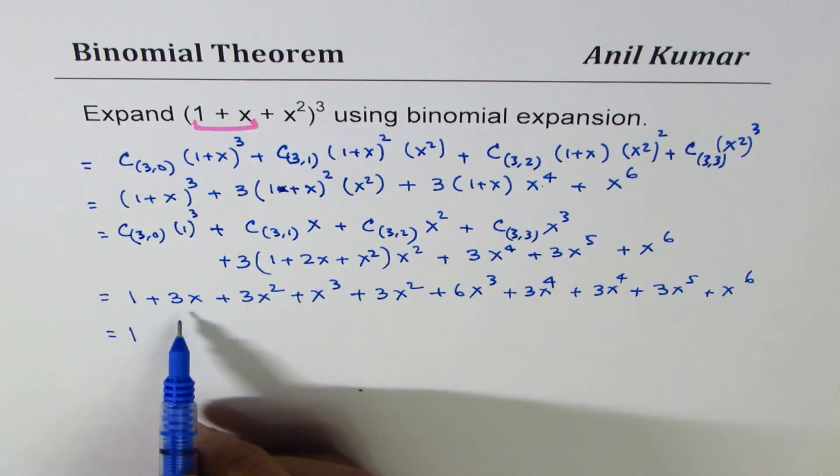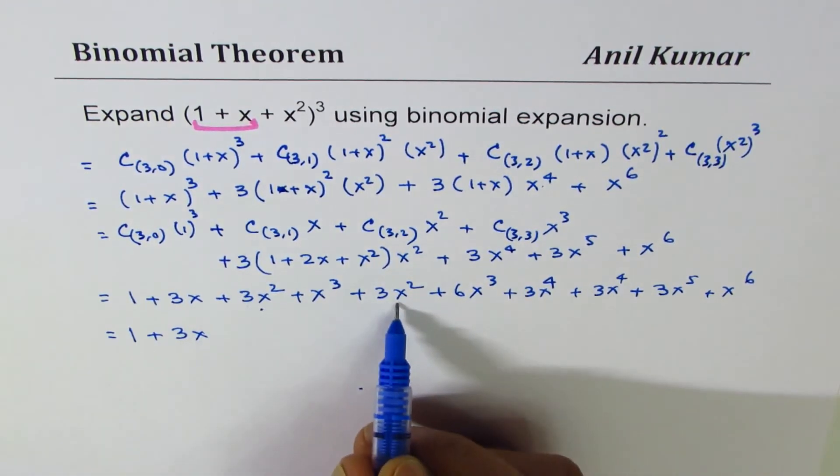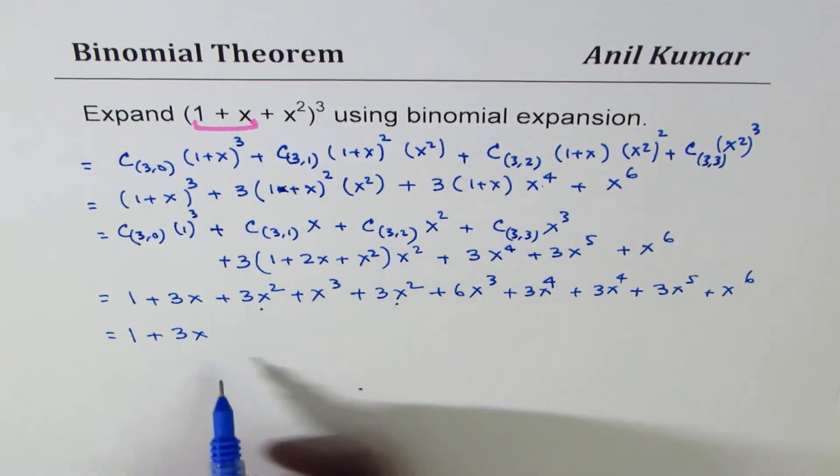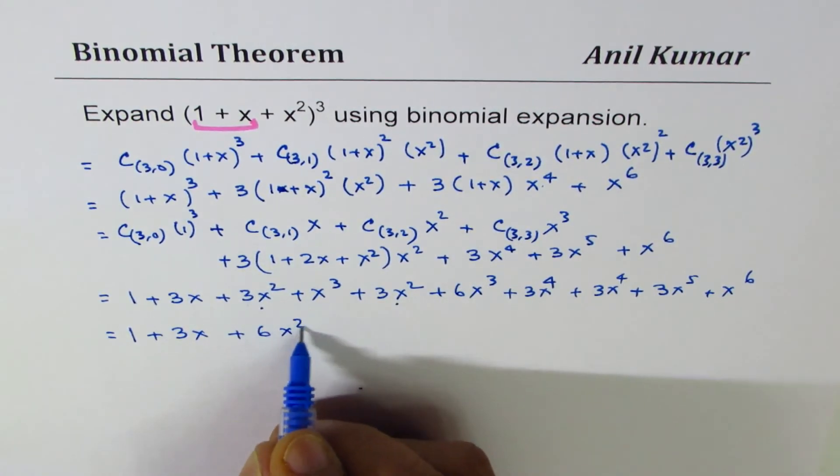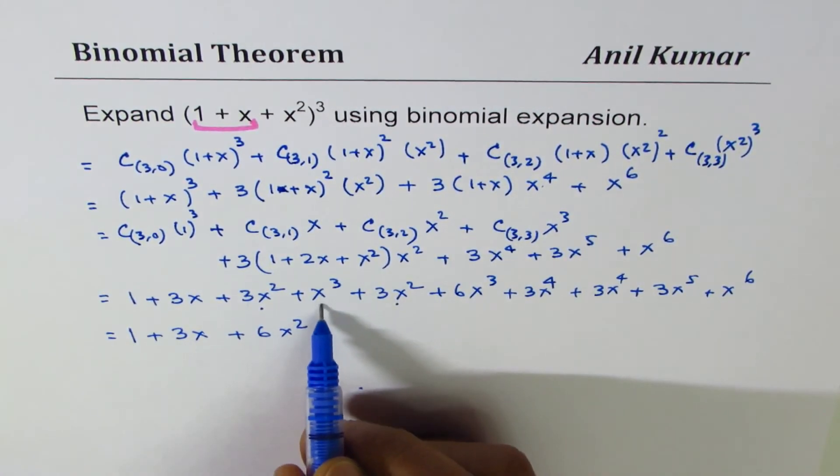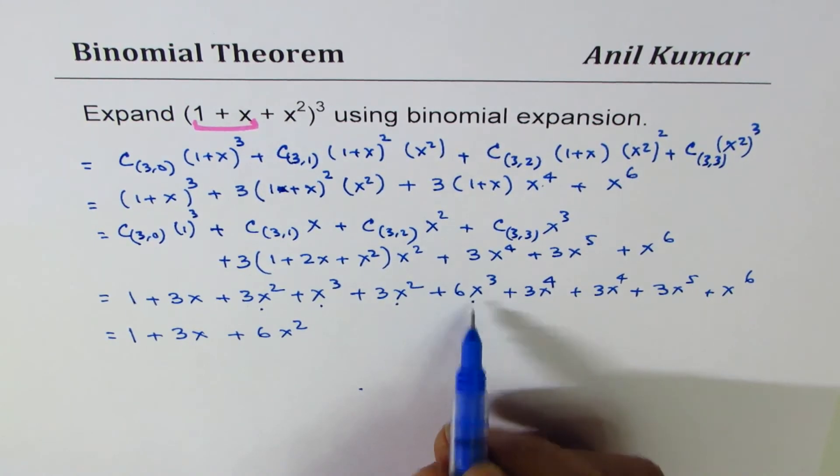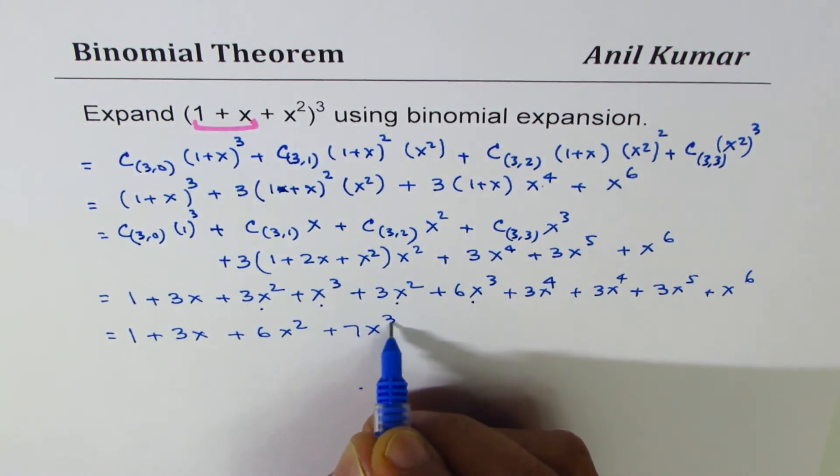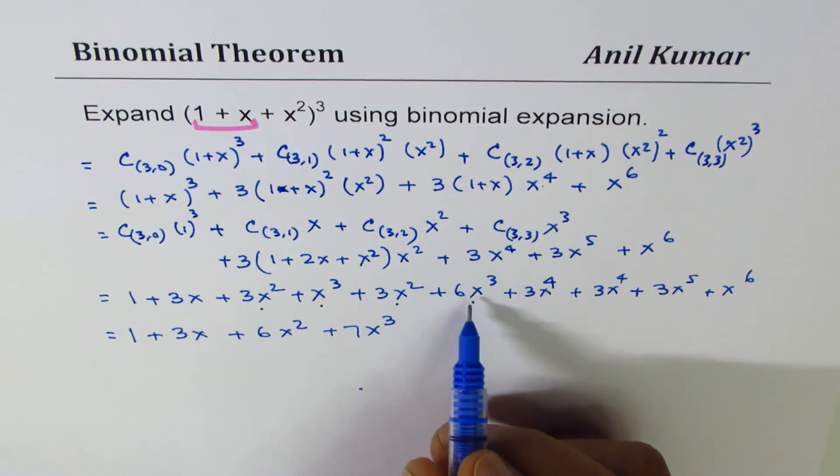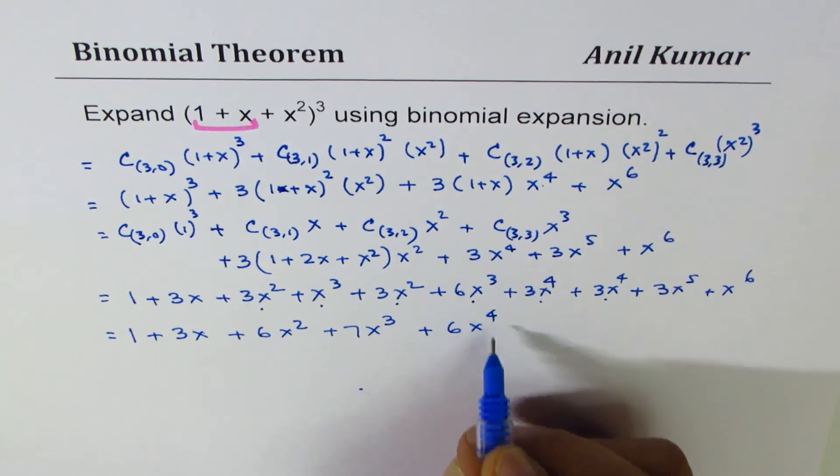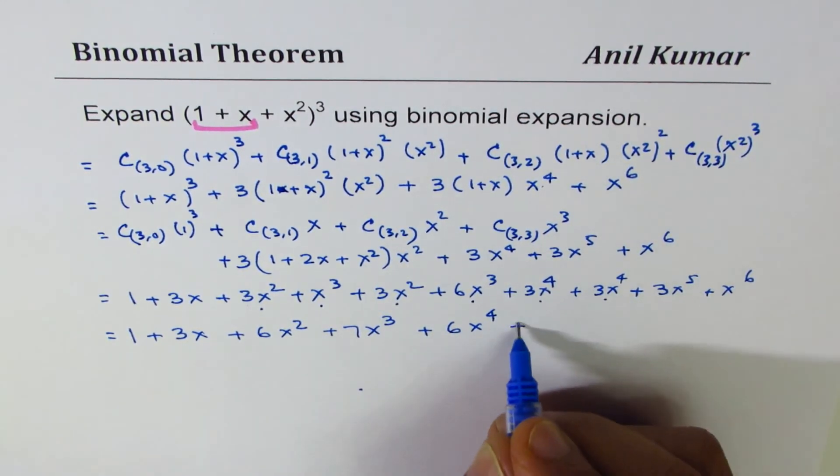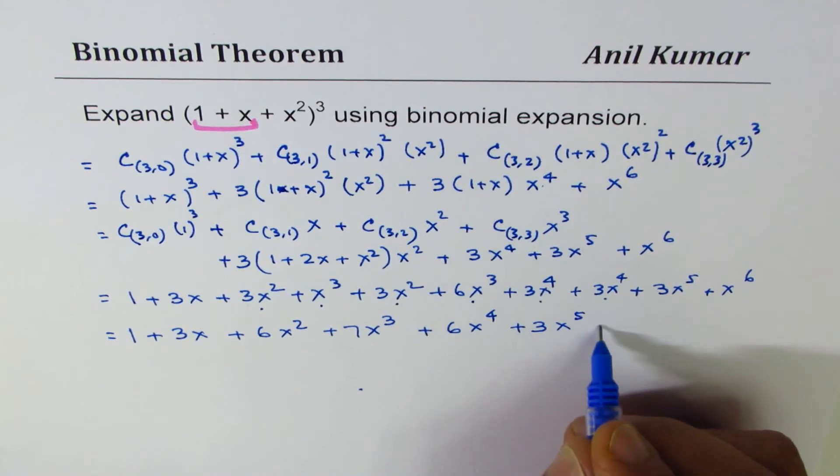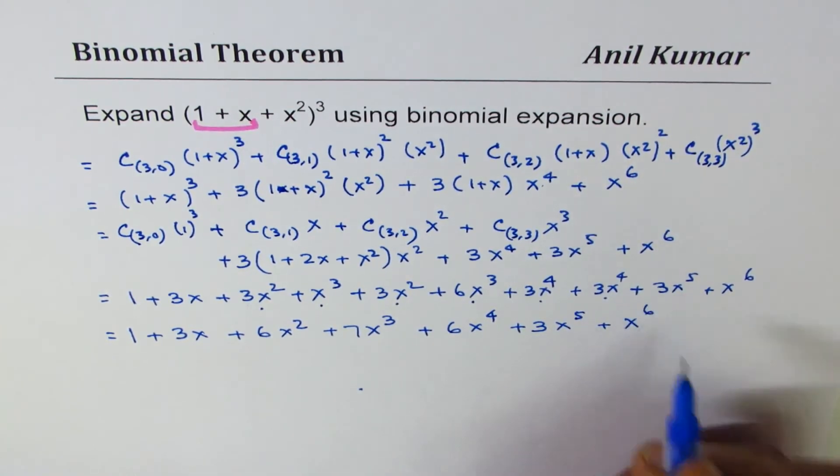The constant is 1. As far as the x terms, there is only 1x. For x² terms we have got 3x² and 3x² that makes it 6x². The cubes: 1 and 6 gives 7x³. For x⁴ we have 2 here, so 6x⁴, plus 3x⁵ plus x⁶.